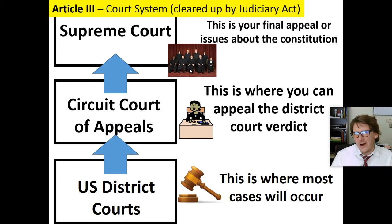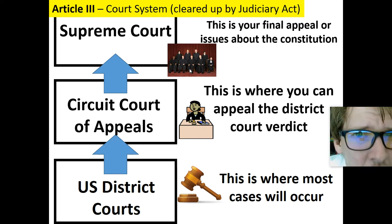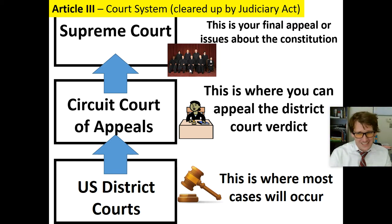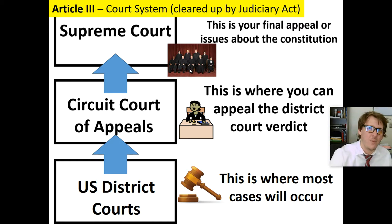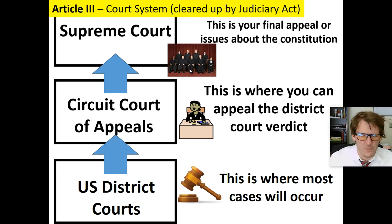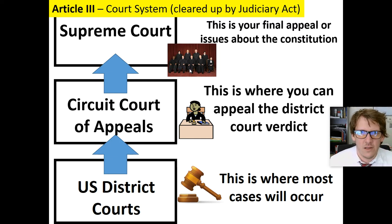Basically, what you need to know — here's a little secret — Article 3 deals with the courts. That's it. The preamble gives us the purpose and why we created the government. The articles give us the basic structure: Article 1, legislative branch makes laws; Article 2, executive branch enforces laws; Article 3 creates our court system. That's it — you don't need to know all the specific details right now.